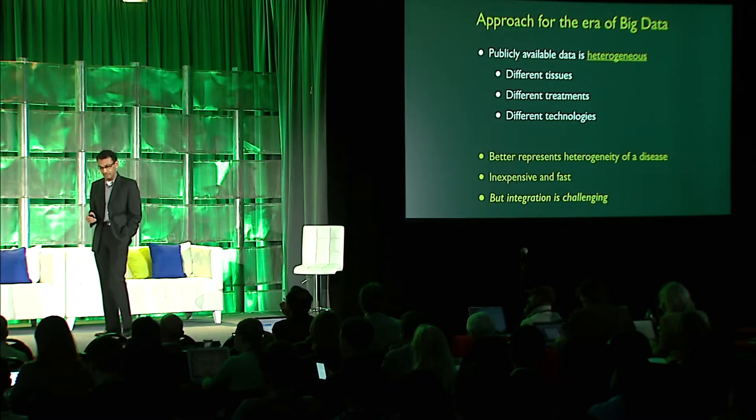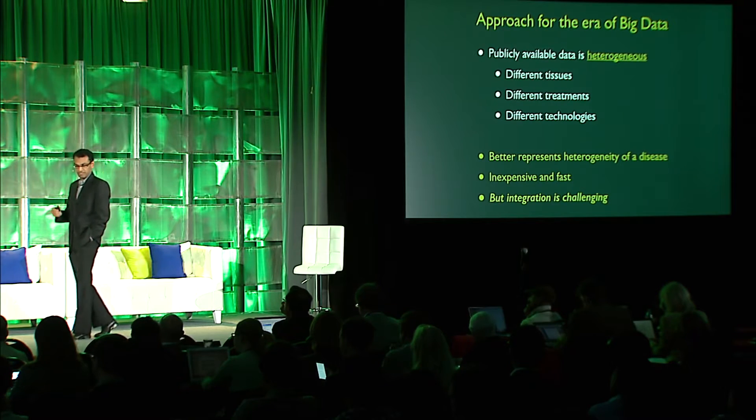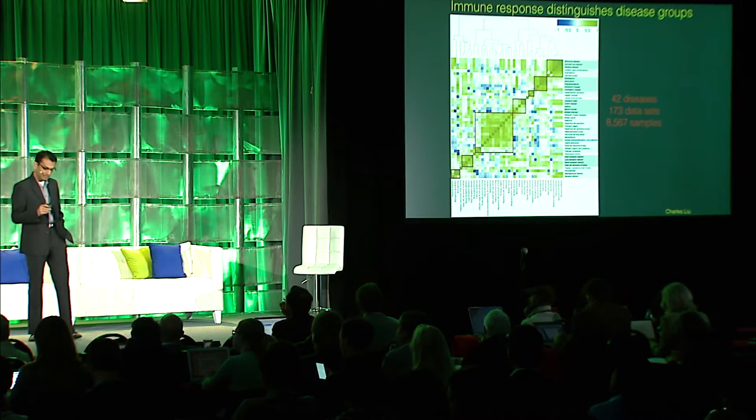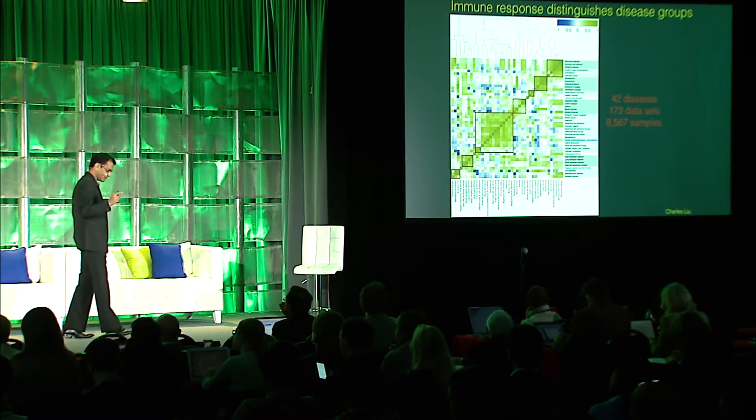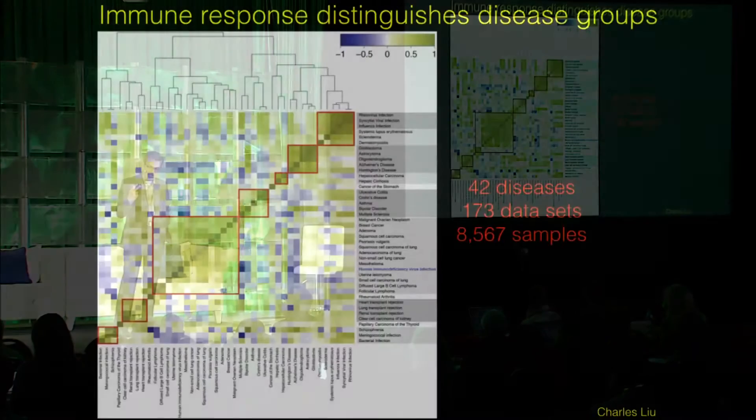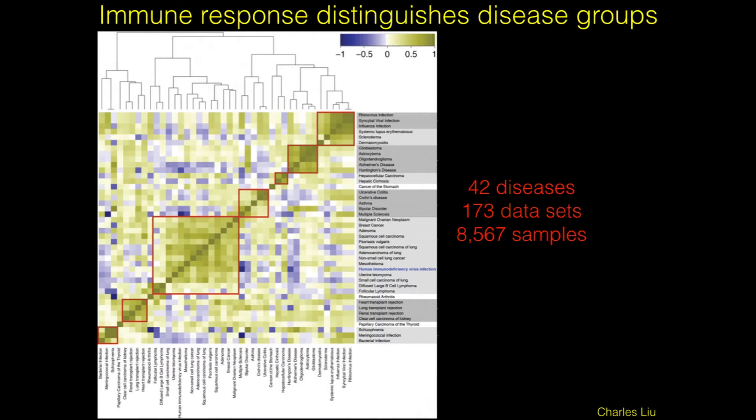The problem is: how do you integrate this data? Because we've been taught to think about controlling different confounding factors, and every confounding factor you can think of is represented in this publicly available data. So that's why we use public data. And second — why study immune response?